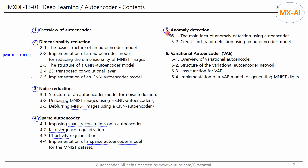In Chapter 5, we will look at anomaly detection. We will use an autoencoder model to perform credit card fraud detection. Finally, in Chapter 6, we will look at variational autoencoder, VAE, a type of generative model. We will generate MNIST images using a variational autoencoder model.